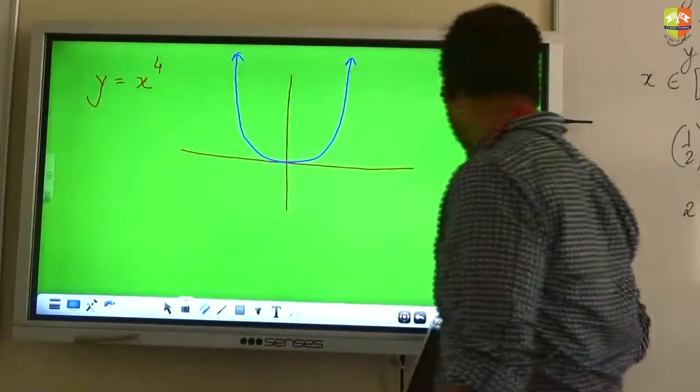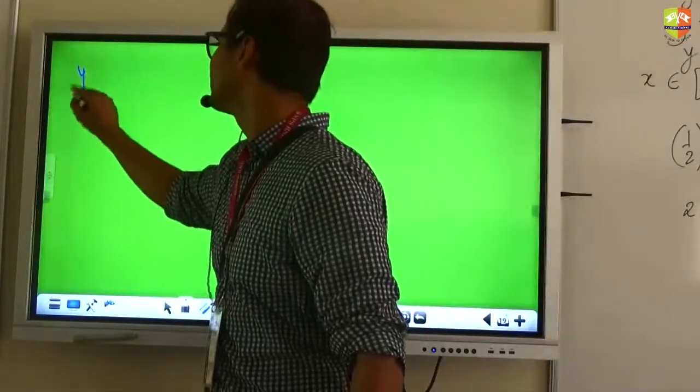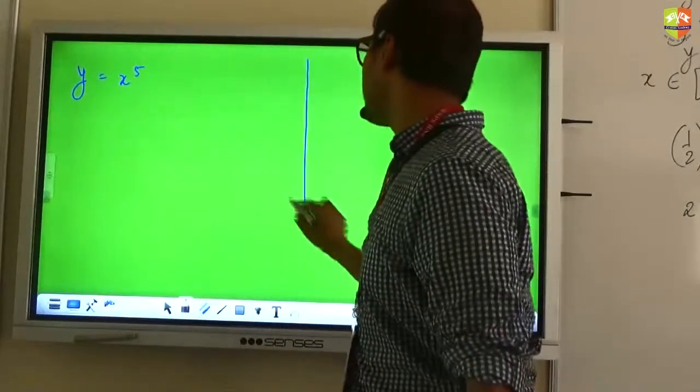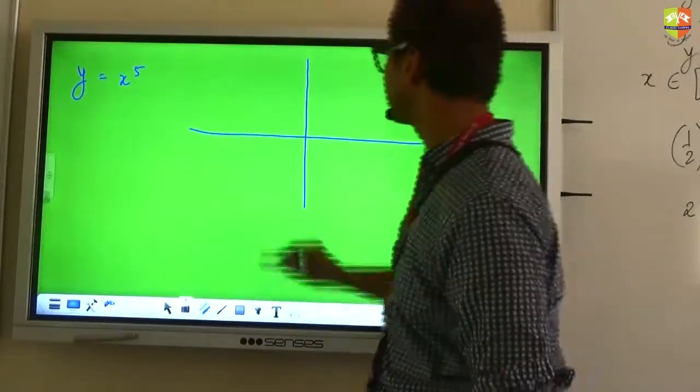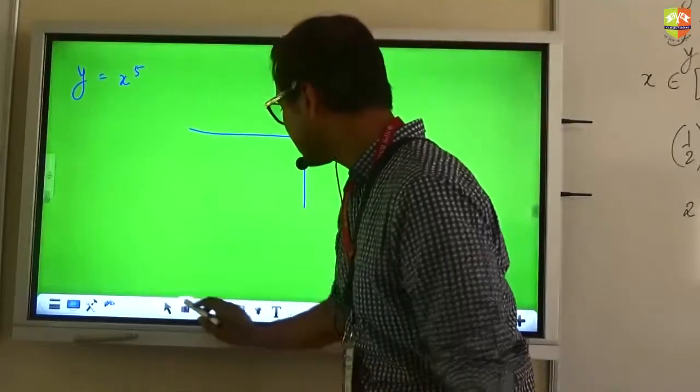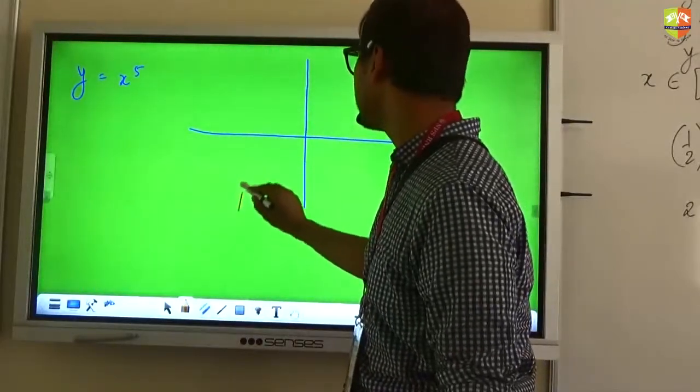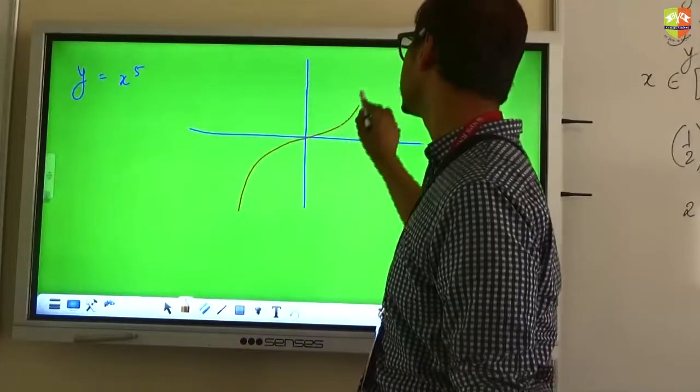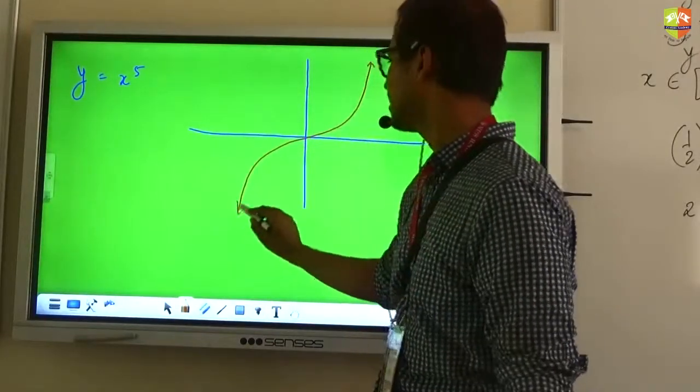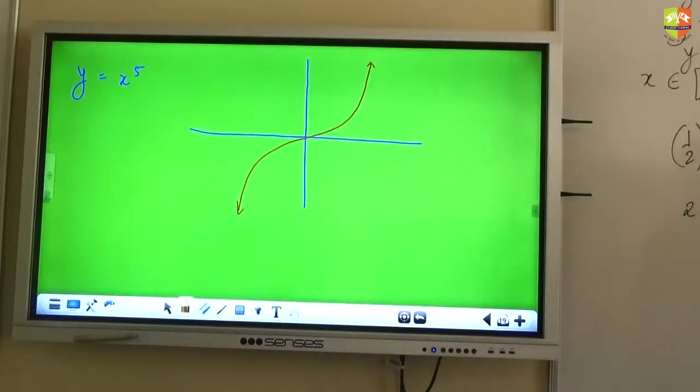x to the power of 5. So x to the power of 5 graph... Okay, I'll show you two graphs simultaneously. I'll show you x to the power 3 first. This was the graph of x to the power 3, right? Correct? How do you expect the x to the power of 5 graph to be?